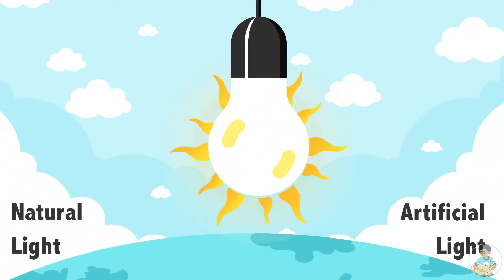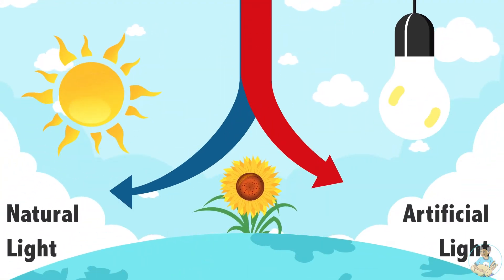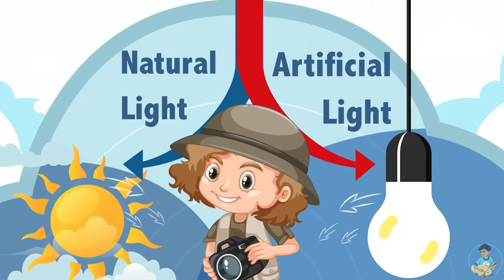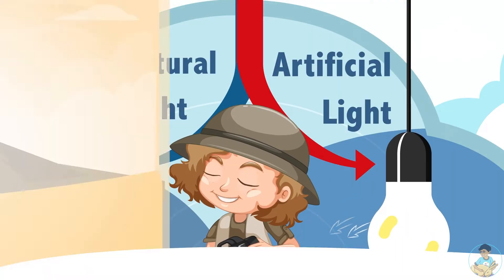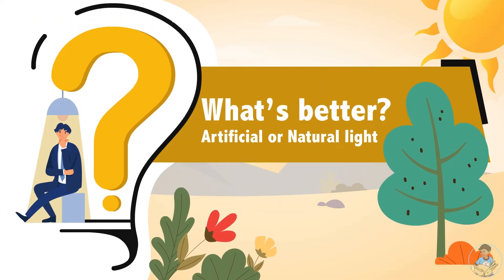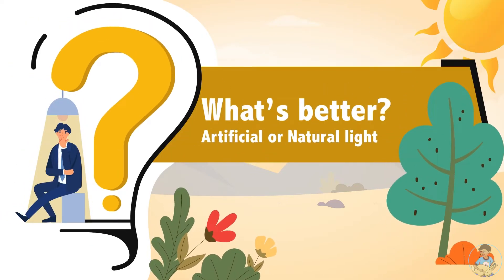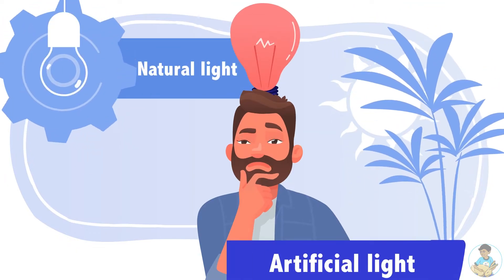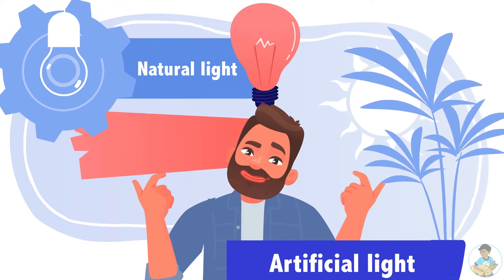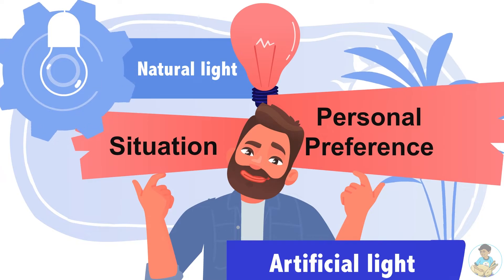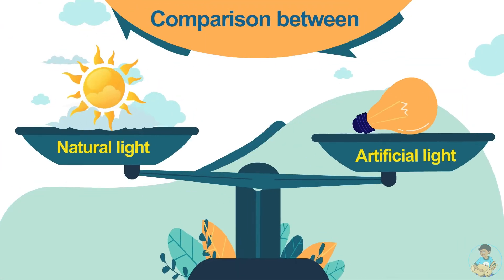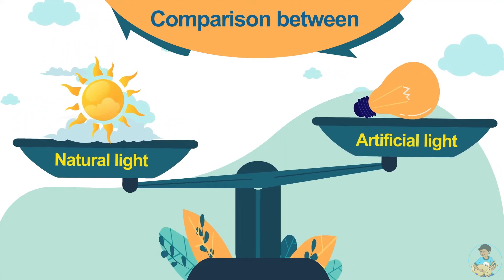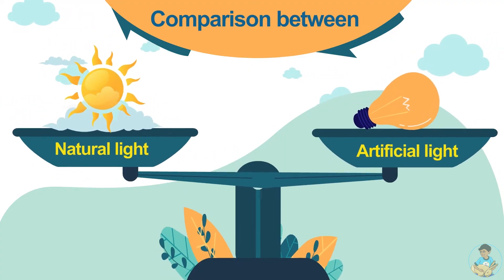Both these light sources are widely used depending on the preference and the kind of effect the photographer wants to achieve in the photo. So what's better — artificial or natural light? Well, there is a place for both. You will be surprised to know that none of these types is better than the other. The choice simply depends on the situation and personal preference. To make a fair comparison between the two types, we must understand the basics of natural and artificial light.